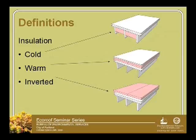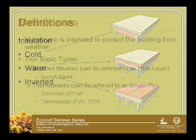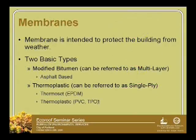We don't have an arrow for the insulation because it can go in three different places. As Dave said: cold, warm, and inverted — and depending on who you talk to, they may use different terms for those. So given those various insulation conditions, what kind of membrane is associated with each?